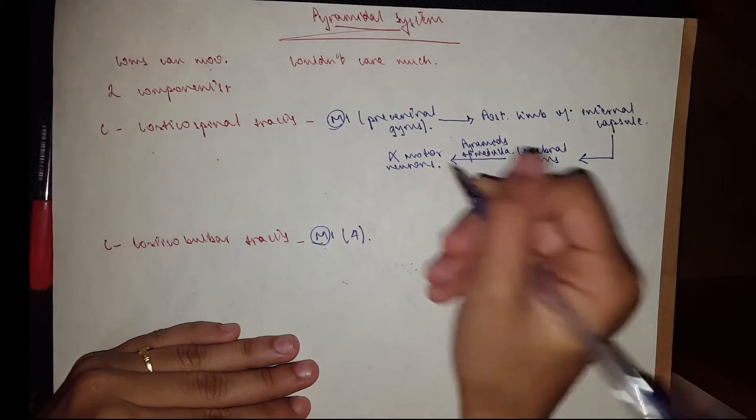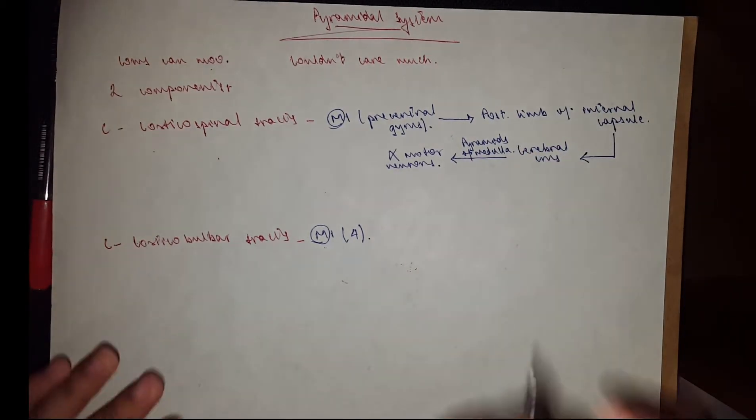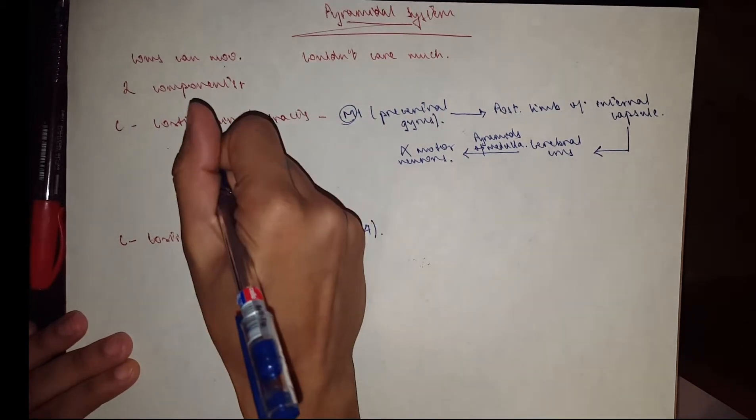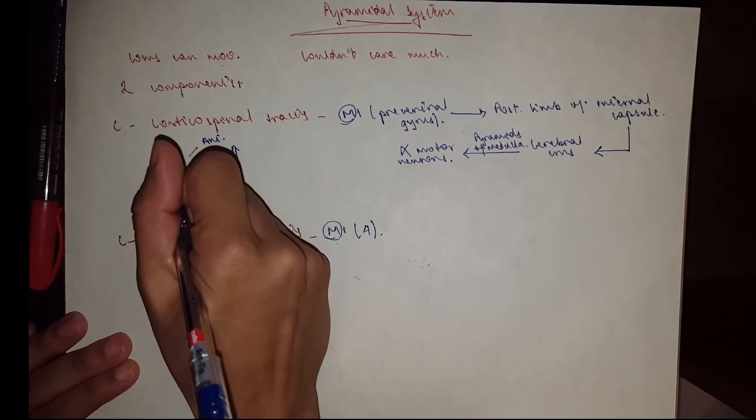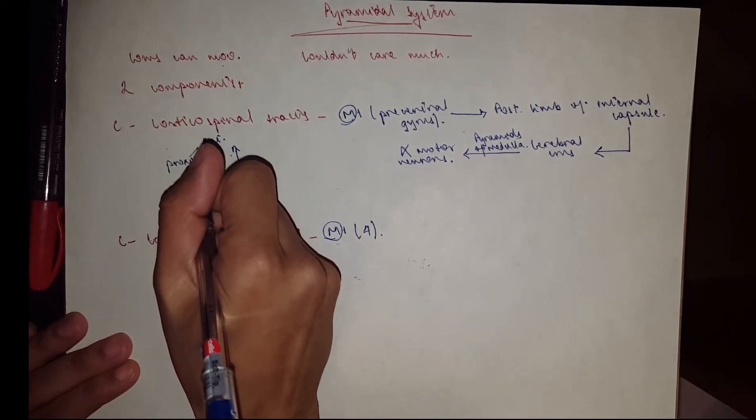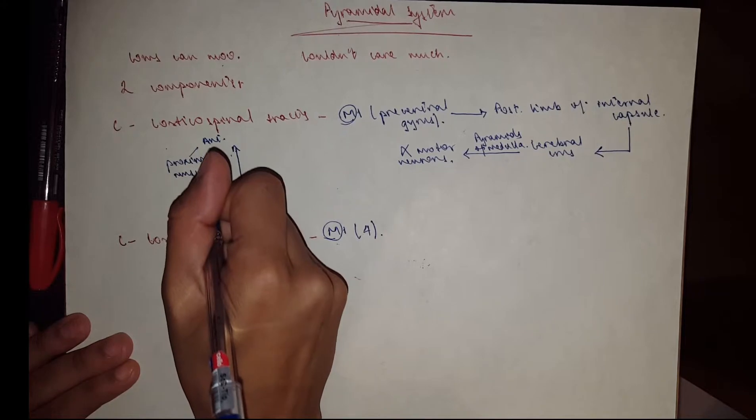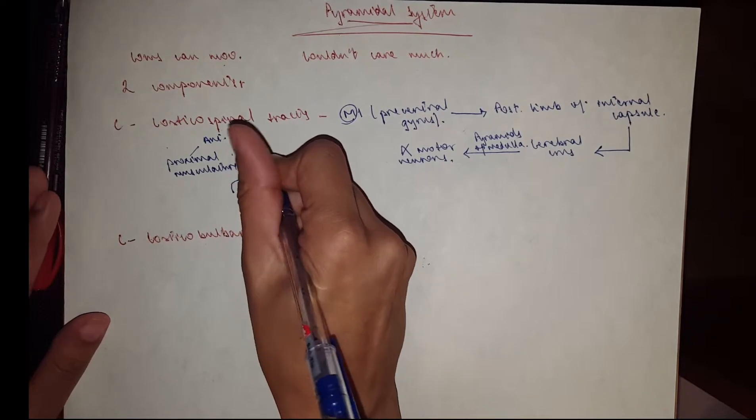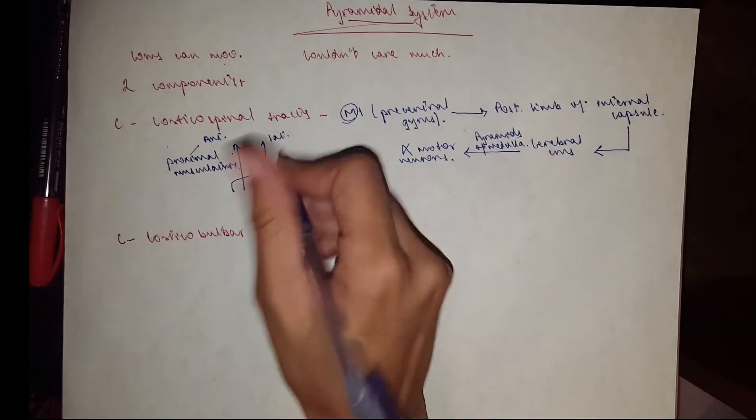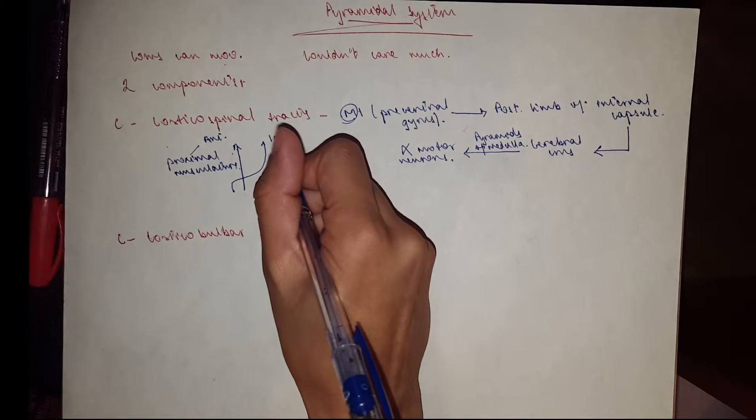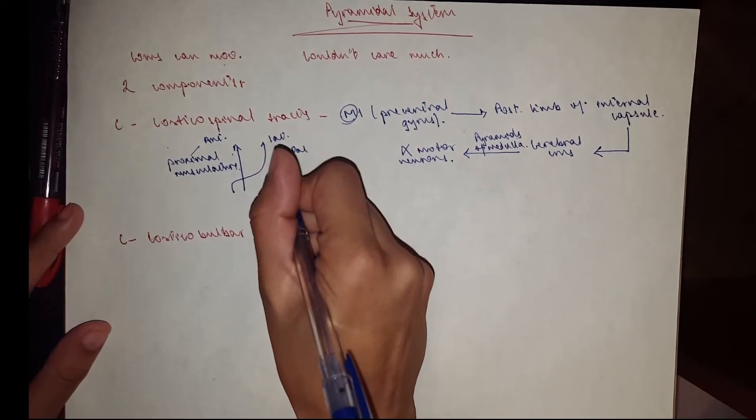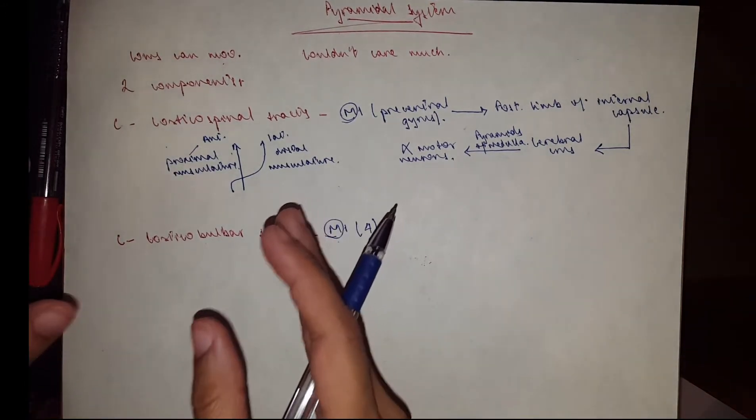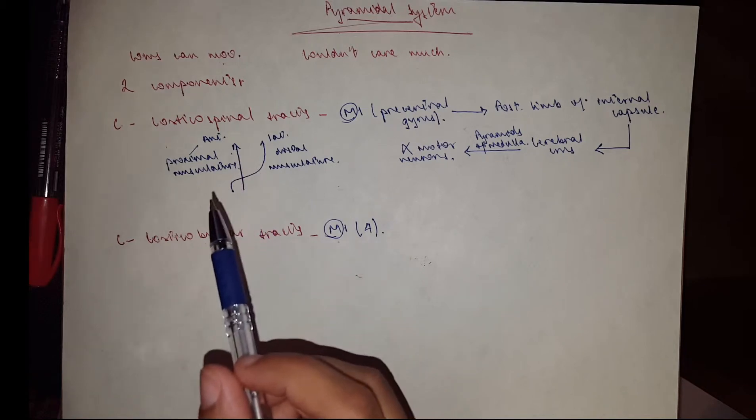Now this corticospinal tract is two: one that goes straight from here, and this is known as the anterior corticospinal tract, and it supplies the proximal musculature. And there's another one, lateral, which crosses over, and that would be the lateral corticospinal tract, and it innervates the distal musculature. And damage to this tract would lead to permanent loss of the fine control of the extremities.